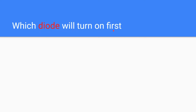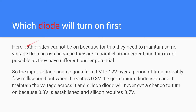Both diodes cannot turn on at the same time. One diode needs 0.7 volt and the other needs 0.3 volt — their voltage drops don't match. Since they are in parallel, they must maintain the same voltage drop across them, and this is not possible given their different barrier potentials — 0.7 volt and 0.3 volt.